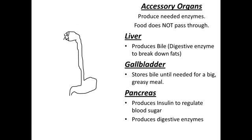So for the drawing of these accessory organs: we already have the mouth, esophagus, and stomach drawn. Next you'll need to add the liver, which is a fairly large organ. Near the liver is the gallbladder, which is basically a little sack with a tube running into the lower part of the stomach. The pancreas is drawn here with a dashed line to show that it sits sort of behind these other organs, behind the stomach.